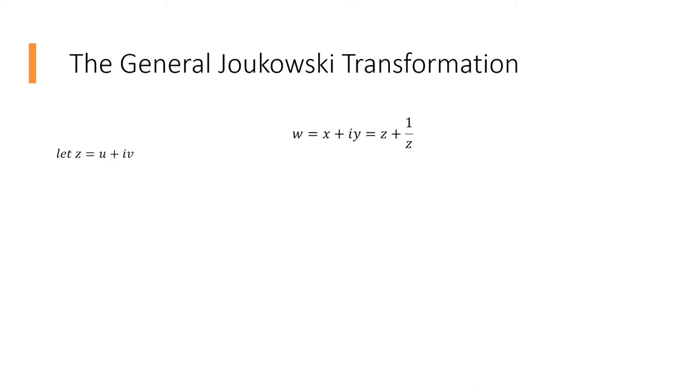So, once you have substituted u plus iv in the place of z, you will have u plus iv plus 1 over u plus iv. You must then rationalize the denominator. This means to multiply the numerator and denominator of the complex fraction by the denominator's complex conjugate, as shown on screen.